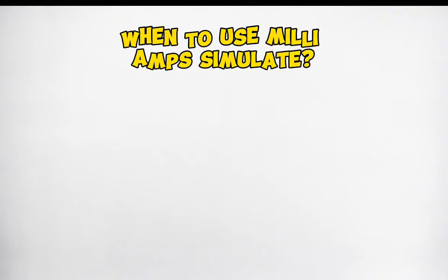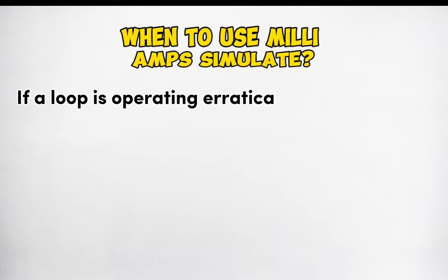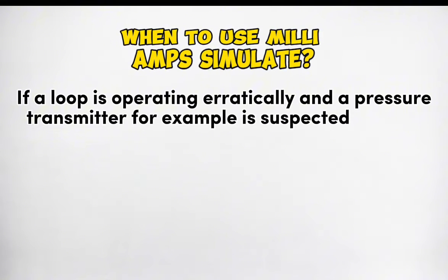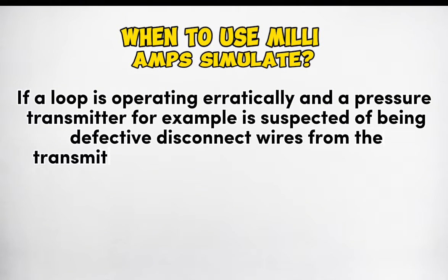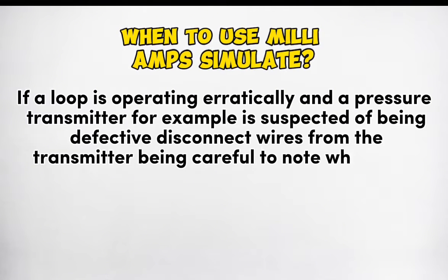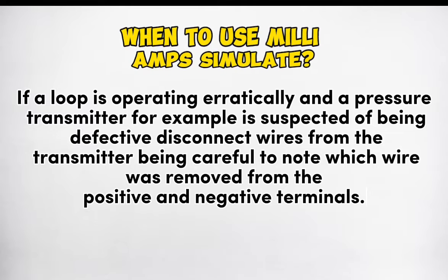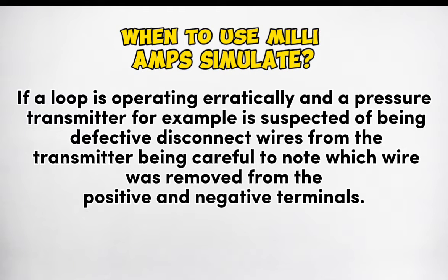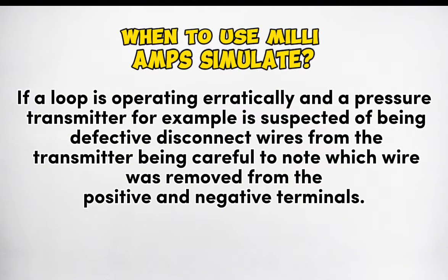When to use milliamp simulate: if a loop is operating erratically and a pressure transmitter, for example, is suspected of being defective, disconnect the wires from the transmitter, being careful to note which wire was removed from the positive and negative terminals.